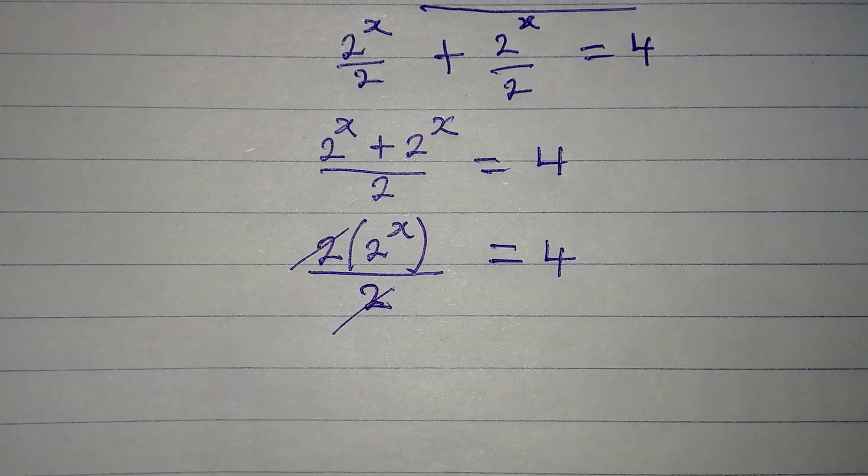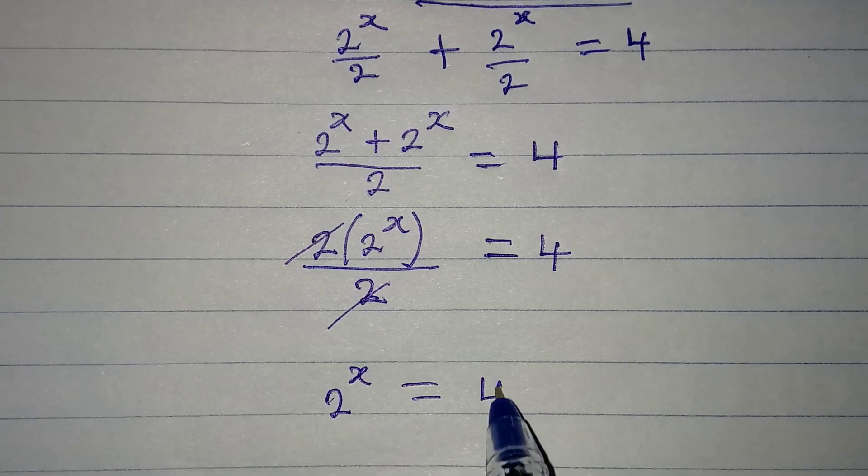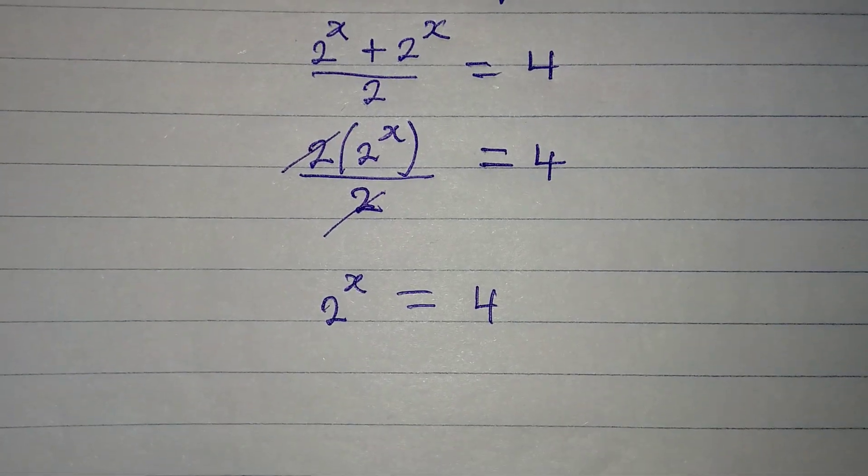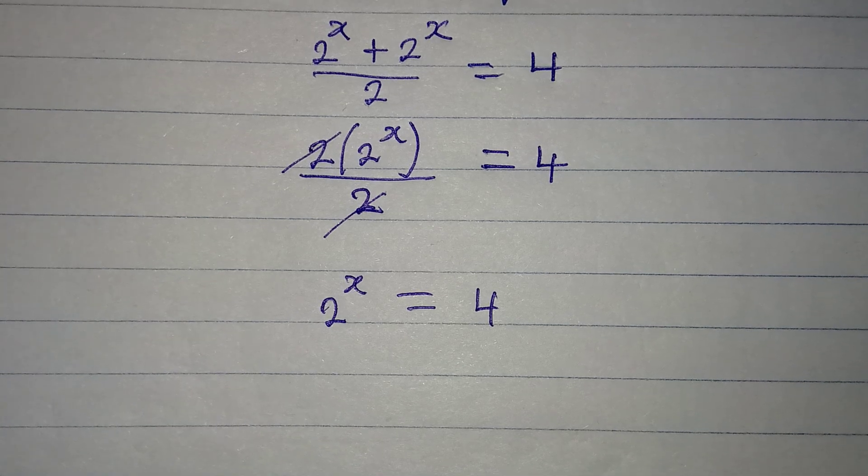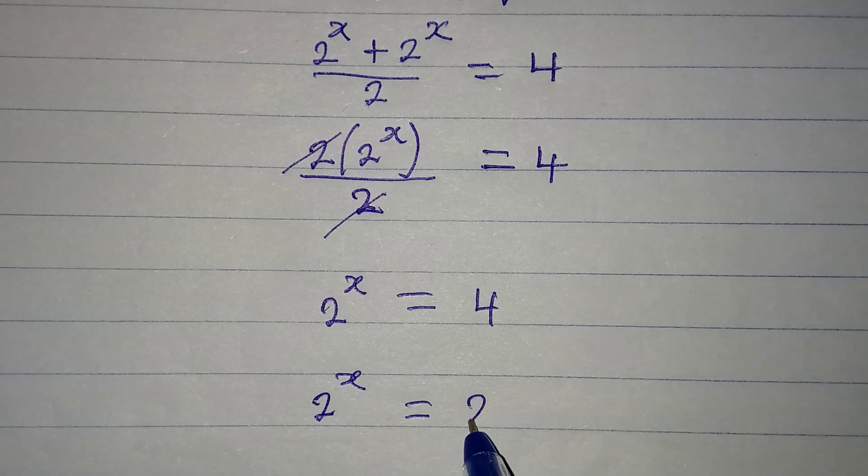Now the next target is we'll have equal bases. So we'll have 2^x which will be equal to 2 multiplied by 2.